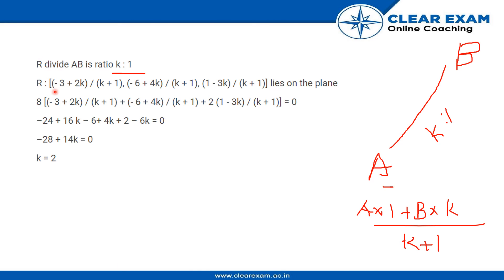so we put this combination over here and we get minus 3 plus 2K by K plus 1, minus 6 plus 4K by K plus 1, 1 minus 3K by K plus 1, and it lies on the plane. So we put these points in the equation of the plane. 8